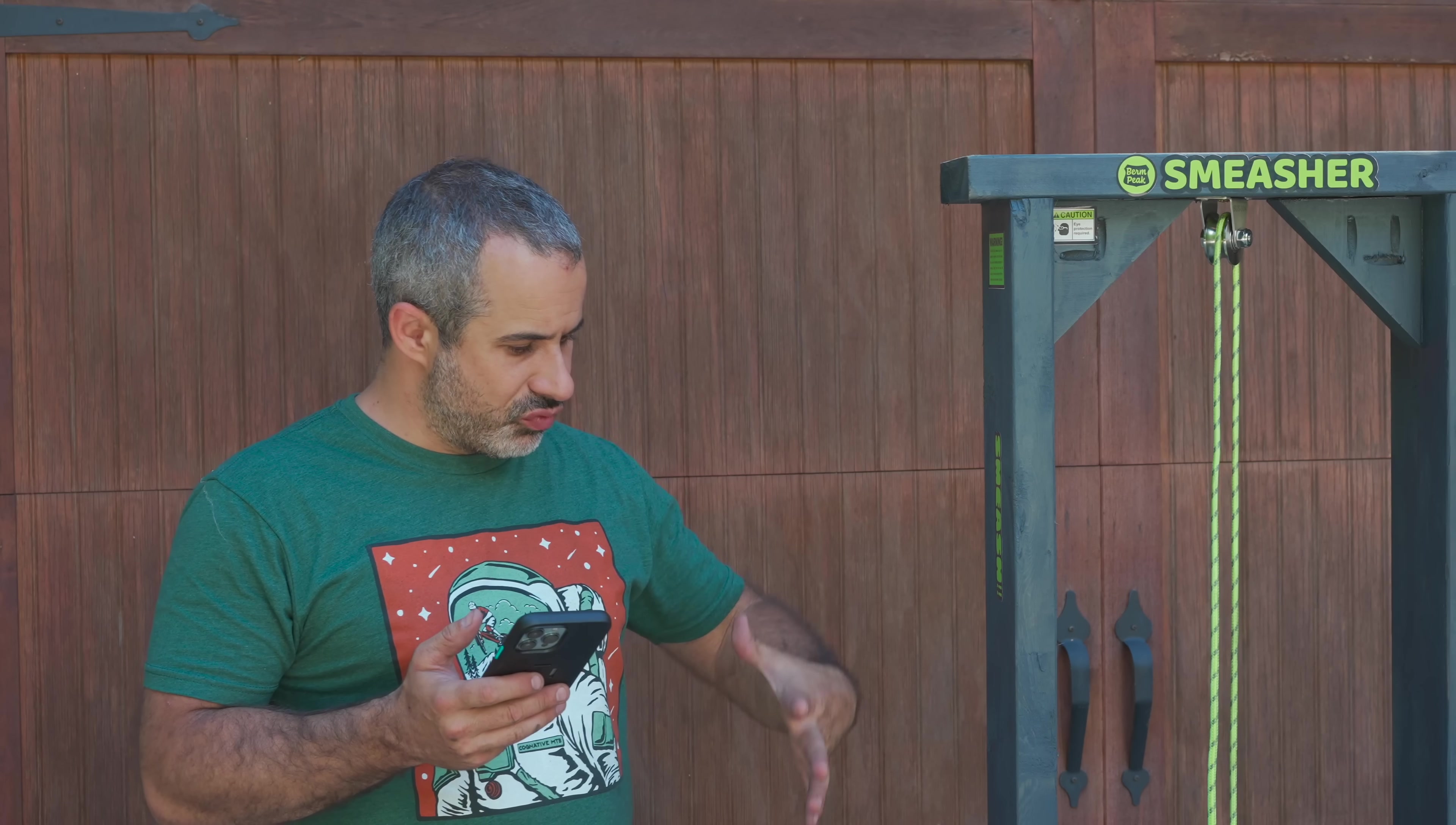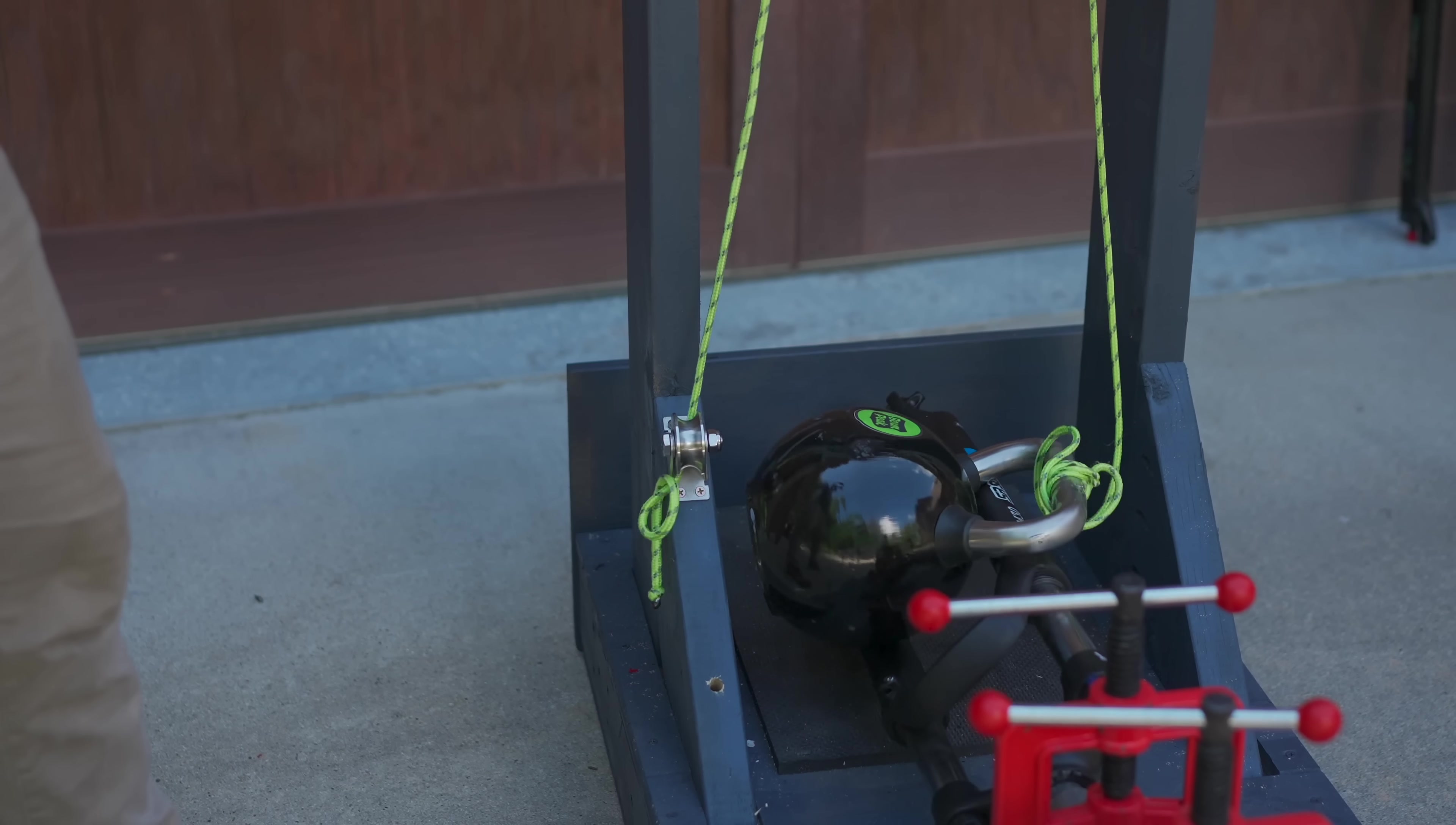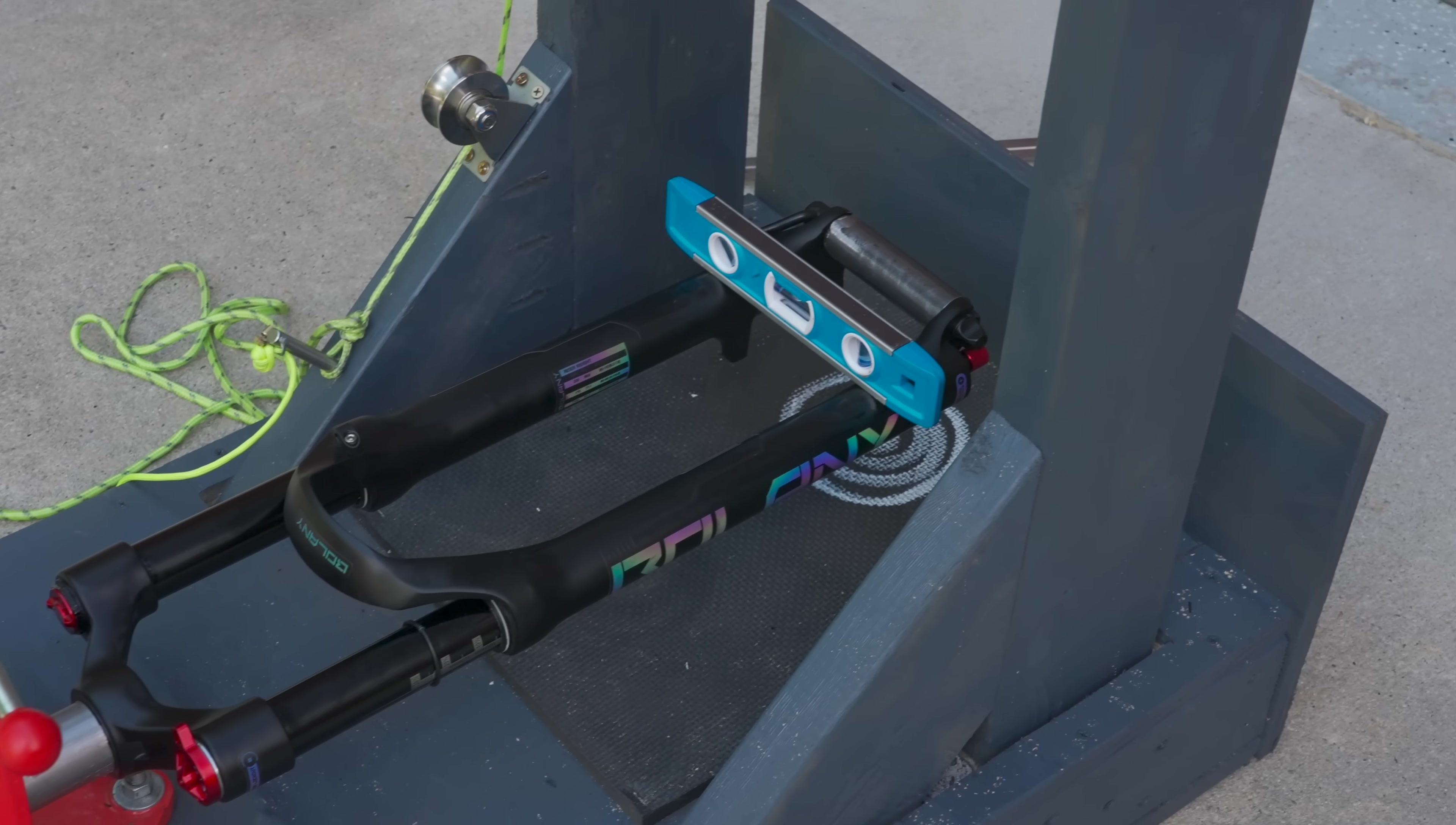So three runs through the berm peak smasher, that Suntour fork deformed 12 millimeters. Kind of hurts, but we're still going to put bikes back on the trail. And hopefully with this data, we can find the fork that's best because we're going to put this baloney fork in here and see how it fares against a tried and true cheap coil fork.